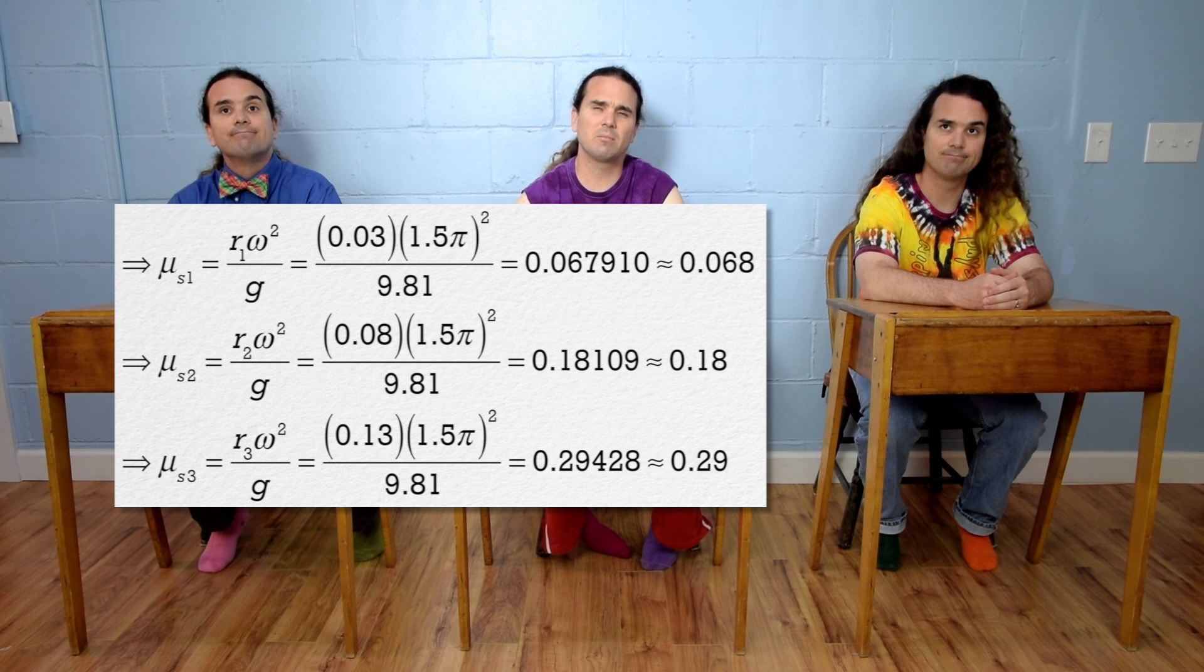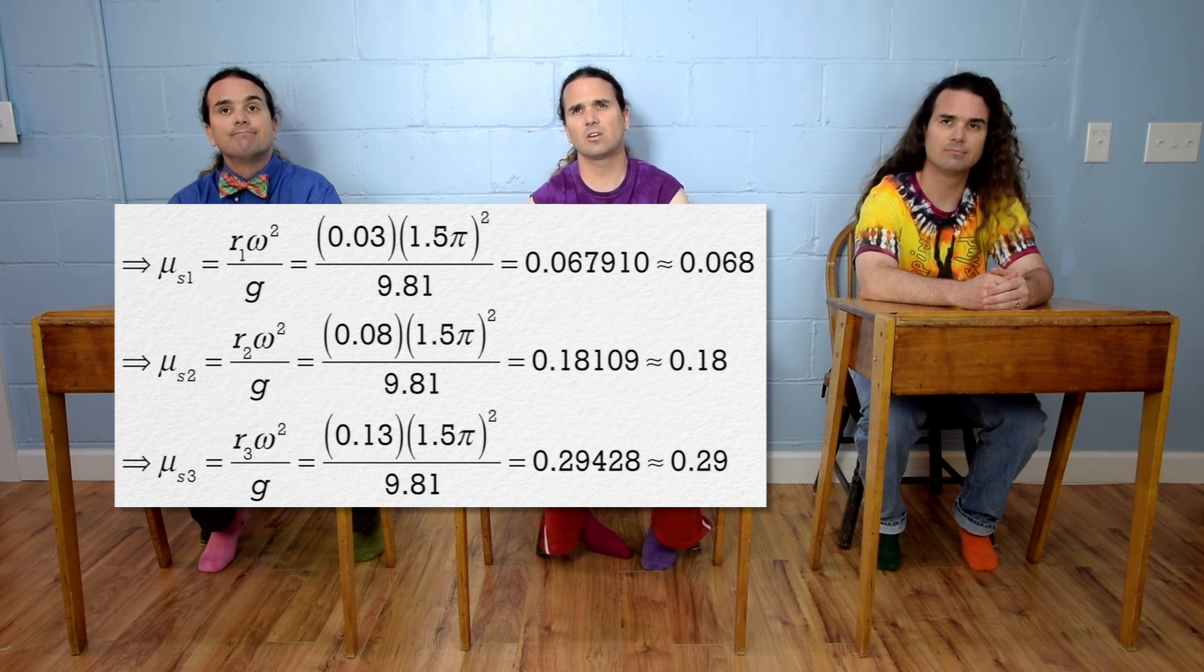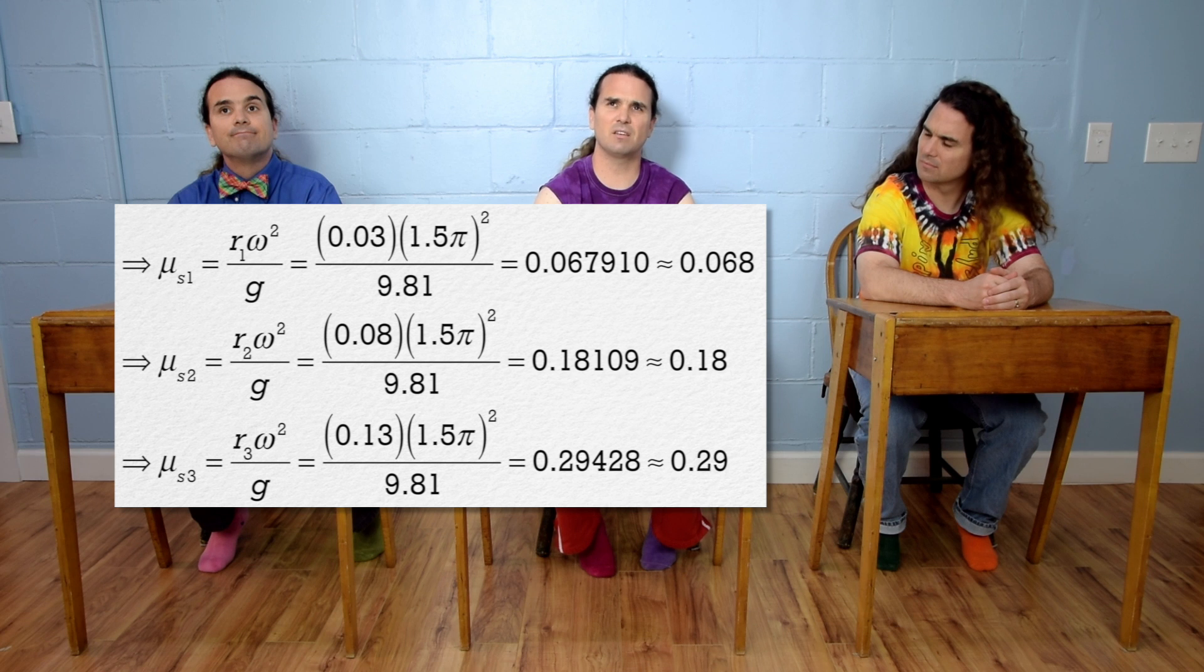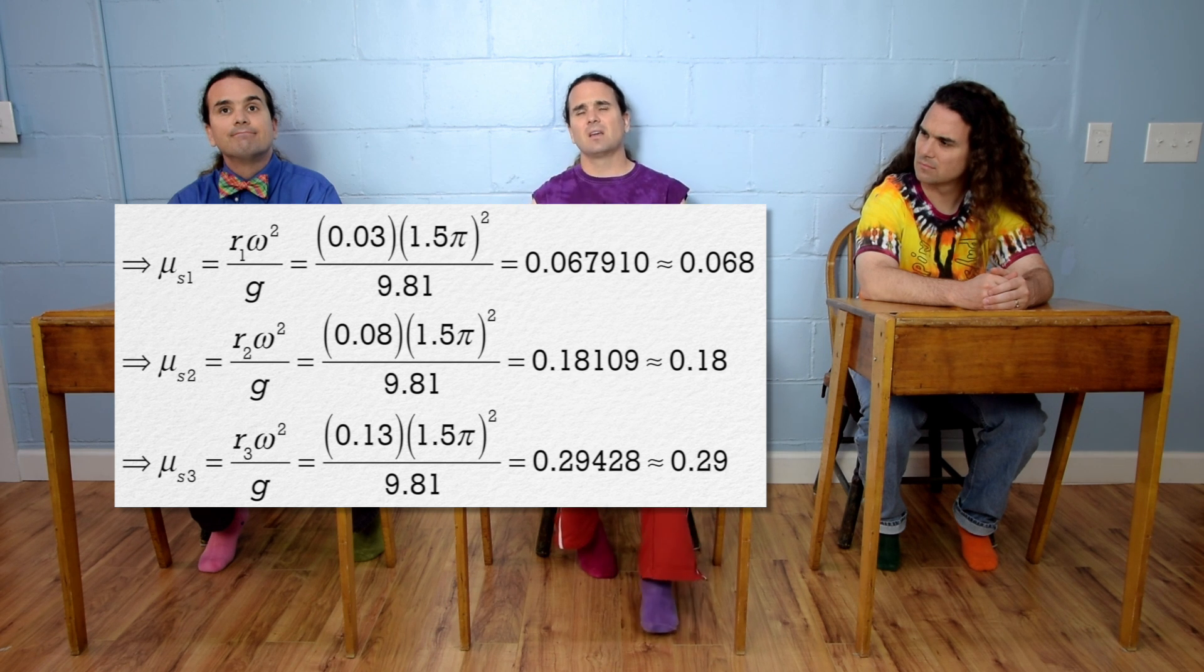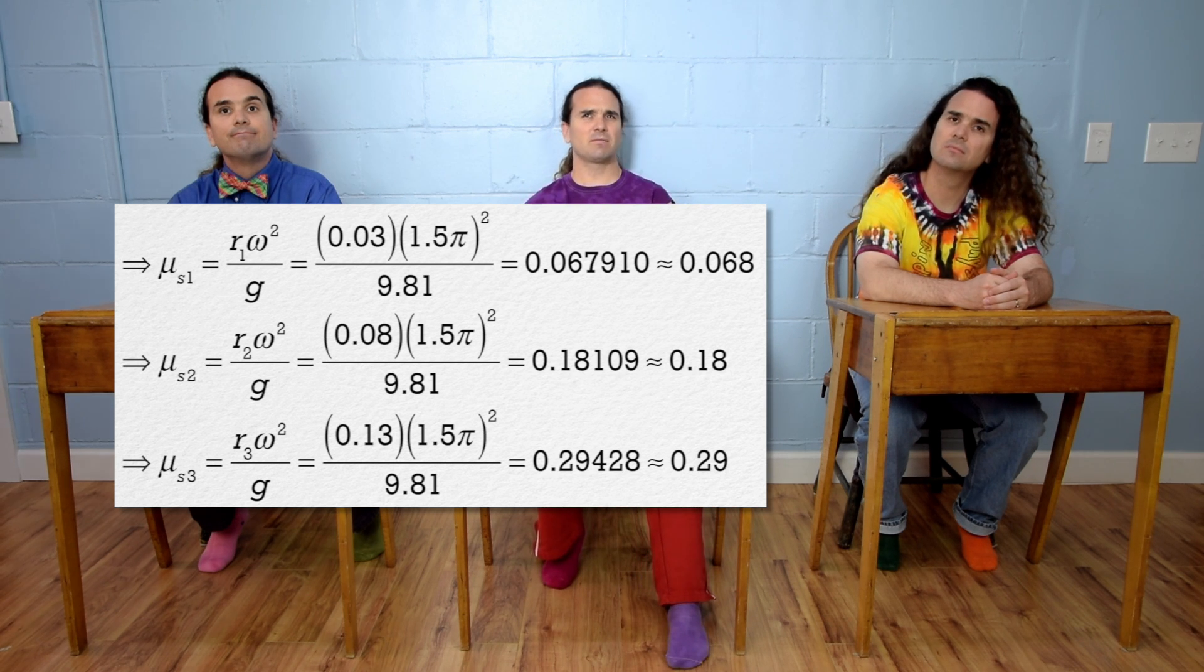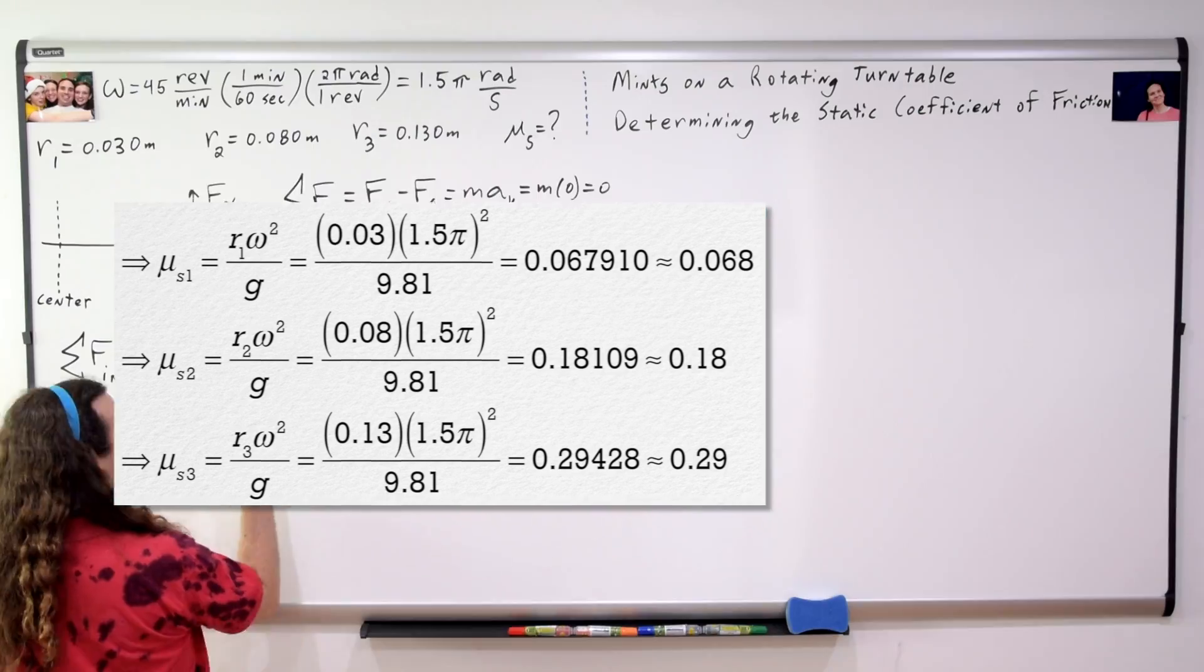That does not really make sense to me. How could the coefficient of static friction be different for each mint? I mean, the surface of the record player does not change, so...